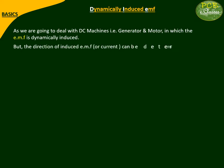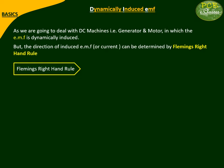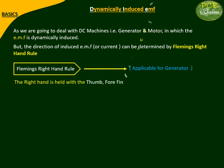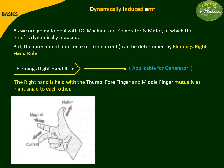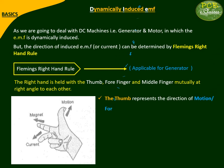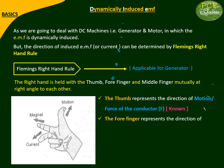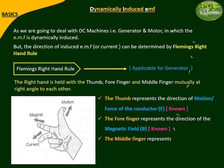What does Fleming's Right Hand Rule state? It says to stretch your right hand with three fingers — the thumb, forefinger, and middle finger — stretched perpendicular to each other, as you can see in the figure. The thumb indicates the motion, force, or direction of rotation of the conductor, which is known to us. The forefinger indicates the magnetic field direction, that is, the flux direction, which is also known to us. But we don't know the direction of the induced EMF or current, which the middle finger gives us — the direction of the induced EMF or generated current, which was unknown to us.